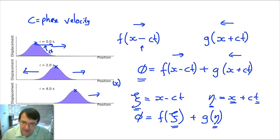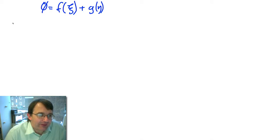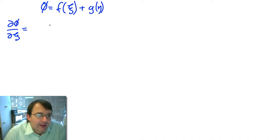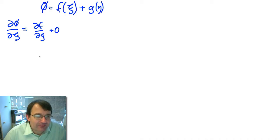Let's look at our partial differentials. Here's our displacement as a function of psi and eta for our two waves moving in different directions. We're going to take a partial derivative — partial phi by partial psi. If I differentiate with respect to psi, I get partial f by partial psi. But if I differentiate g with respect to psi, it's not a function of psi — it's a function of eta — so I get zero. If I hold psi constant, g is a constant value, and differentiating a constant gives nothing.